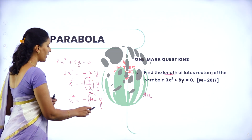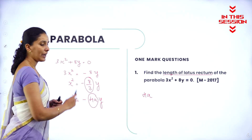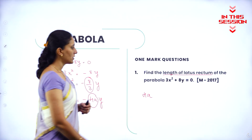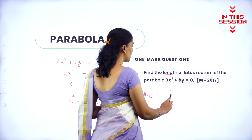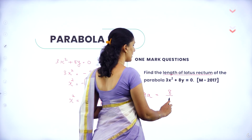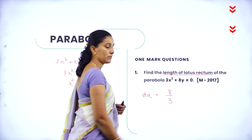So what is the value of 4a here? It is 8 by 3. So therefore, the length of latus rectum is 8 by 3.